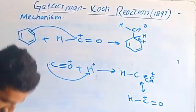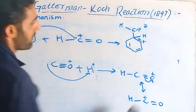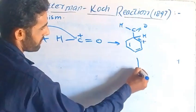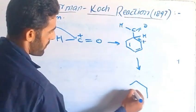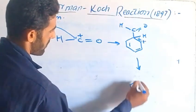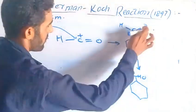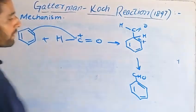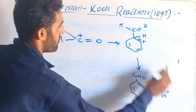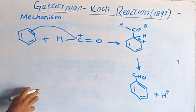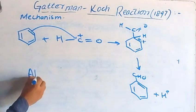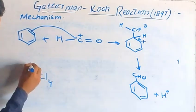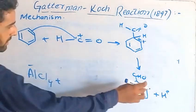Next step: rearomatization occurs. The CHO group is introduced. Here the hydrogens are lost — the H is bound to the ring — plus H positive is released. Next, AlCl4 negative plus H positive regenerates.